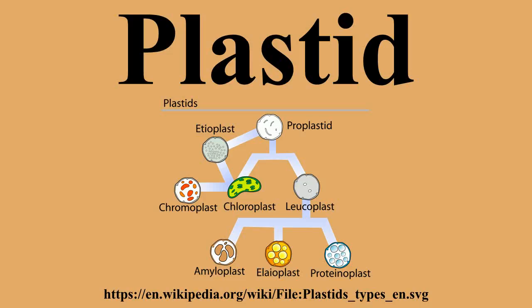In plants, plastids may differentiate into several forms depending upon which function they play in the cell. Undifferentiated plastids may develop into any of the following variants: chloroplasts, the green plastids for photosynthesis; see also etioplasts, the predecessors of chloroplasts.